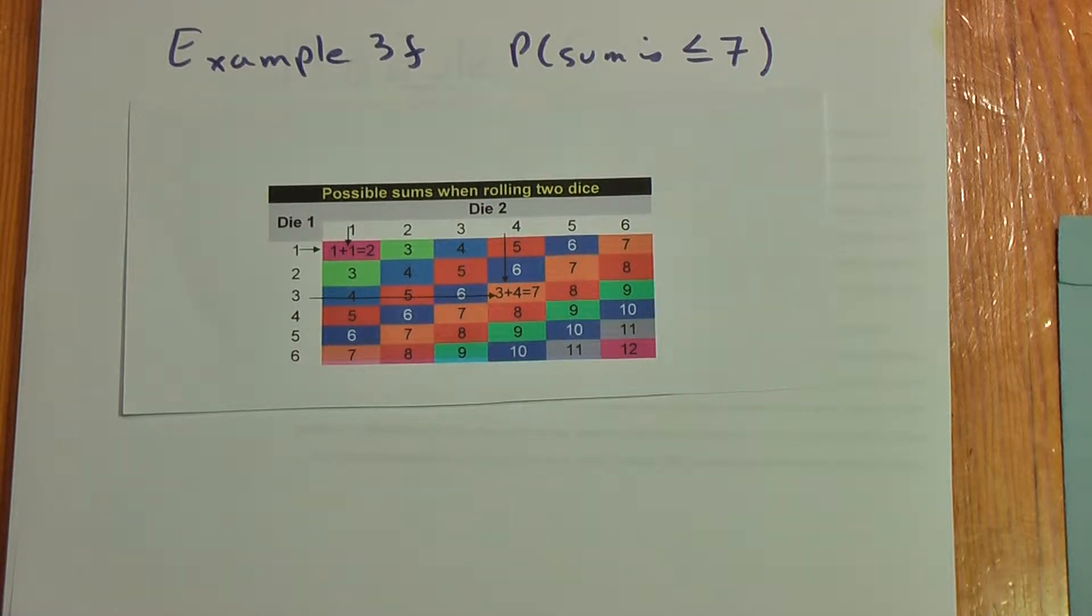Again, we're working with rolling two dice. We want to know what is the probability of getting a sum less than or equal to 7? We've looked at the probability of getting a sum greater than 7, now less than or equal to 7.